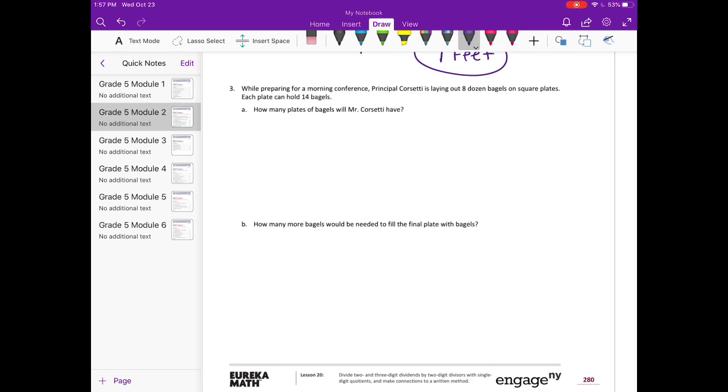Number 3. While preparing for a morning conference, Principal Corsetti is laying out 8 dozen bagels on square plates. Each plate can hold 14 bagels. How many plates of bagels will Mr. Corsetti have? So he has 8 dozen. There are 12 in 1 dozen. So there's 8 times 12 bagels. So let's figure out 12 times 8 is 96. So they have 96 bagels. And each plate can hold 14 bagels. So let's see how many plates of bagels we can get. So 14 can't go into 9.